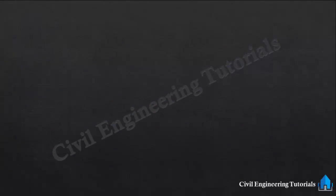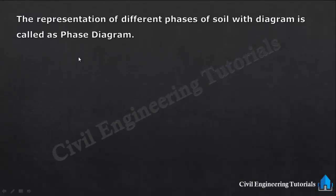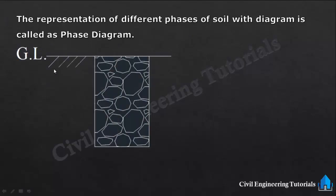Phase system is represented with a phase diagram. So what is a phase diagram? The representation of different phases of soil with a diagram is called a phase diagram. We will discuss about the 3-phase system of soil with phase diagram. Below ground level there is a soil mass, and a soil mass is a 3-phase system.